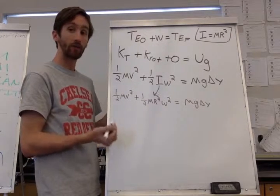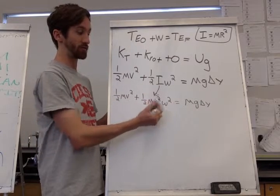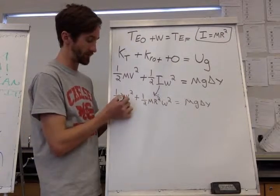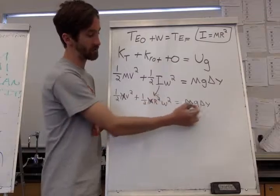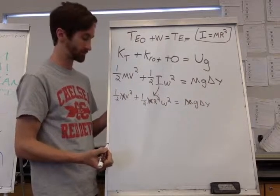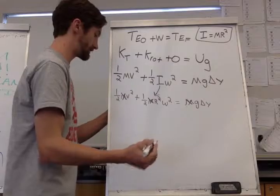And what I now notice is I have mass in every single part of this equation, in every term, so I can cancel out the mass. And now I'm just going to plug in my givens.